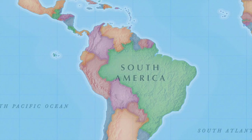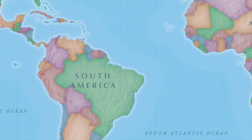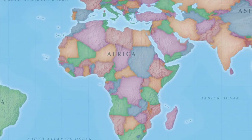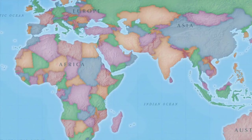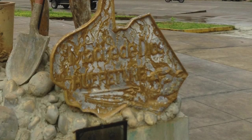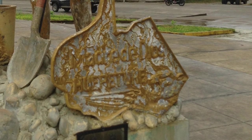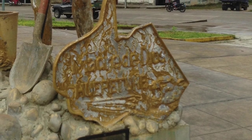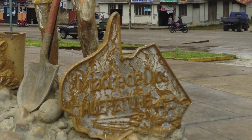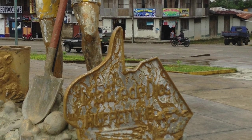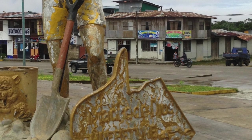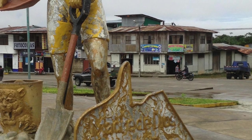Gold mining using mercury amalgamation is not unique to South America. It's widespread in Africa, Asia, Southeast Asia, Indonesia, and the Philippines. There have been many efforts to ban mercury and outlaw this form of gold mining, but given gold's commercial and industrial importance and its high price, this form of gold mining is more prevalent than ever before and will continue to be so.